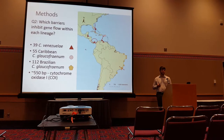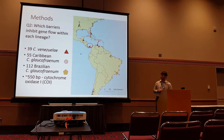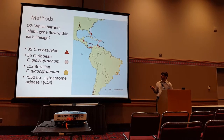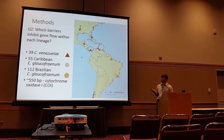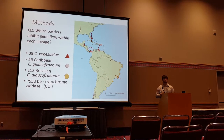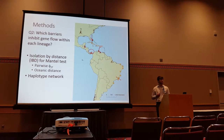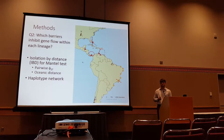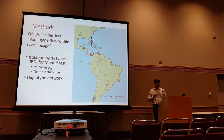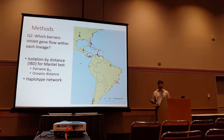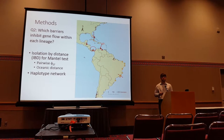I subset my samples into their lineages: first looking at venezueli in the Caribbean, followed by the Caribbean glochophranum lineage, and lastly the Brazilian glochophranum lineage. Using the same sequence dataset, I first calculated isolation by distance, looking at pairwise FST between populations and oceanic distance between populations. I also performed a haplotype network analysis to look at the distribution of haplotypes in each population.